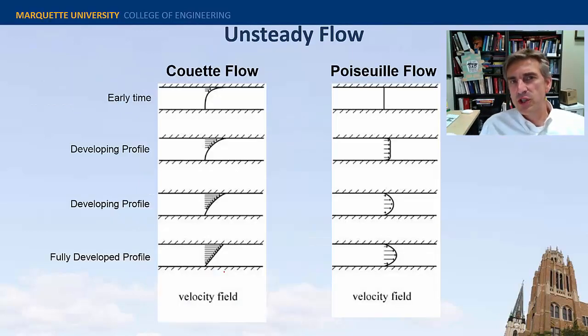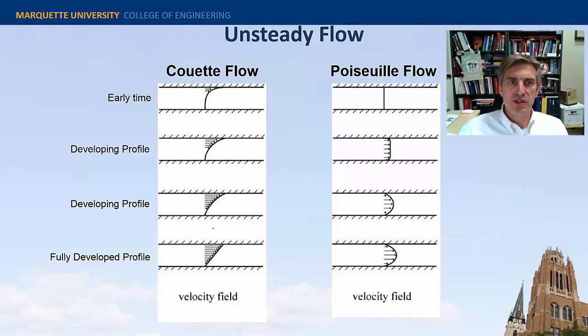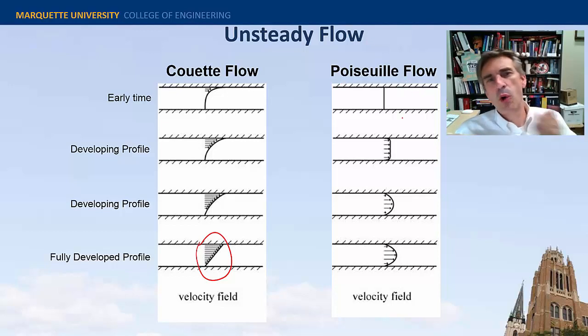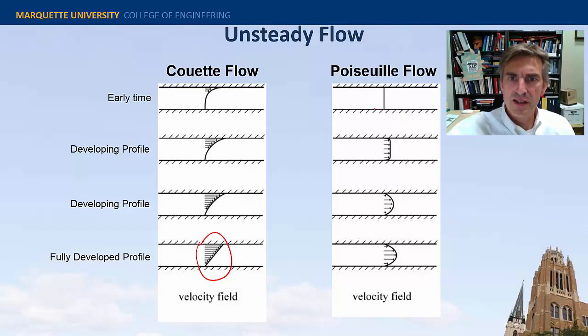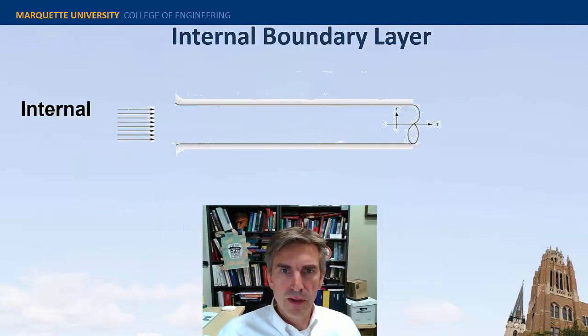Also, those flows that I just showed you were all steady flows. You must realize that during startup there can be transitional flows. Here the upper plate is moving and the lower plate is not. Through a series of images in time you can see that the profile is developing eventually to this linear profile that we associate with no pressure gradient. Likewise in a Poiseuille flow, where neither plate is moving and it's only being driven by the pressure gradient, upon startup you can see that it would develop into a fully developed profile at some long time.